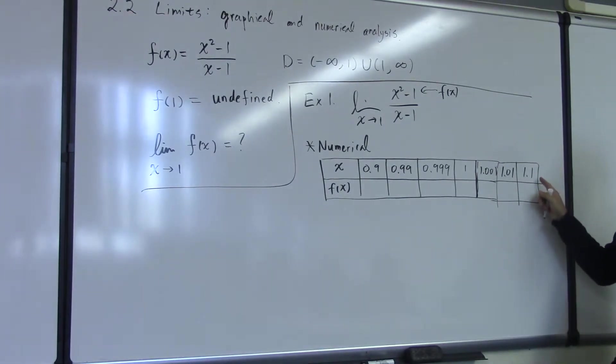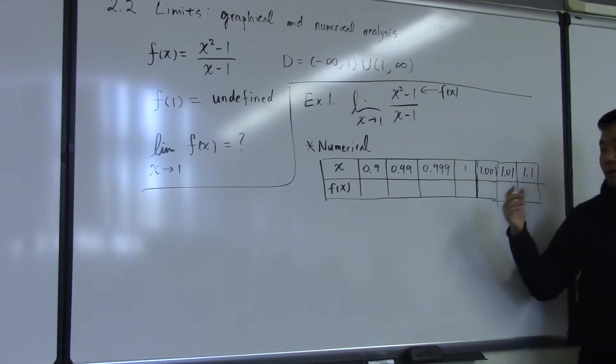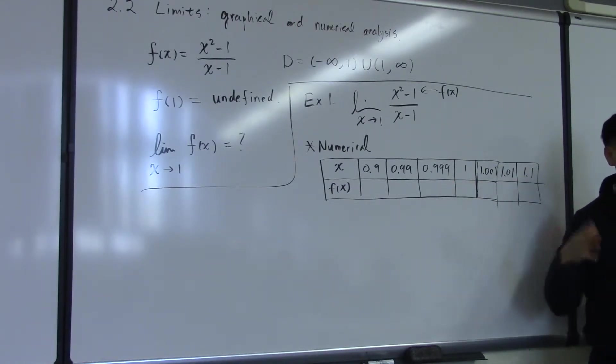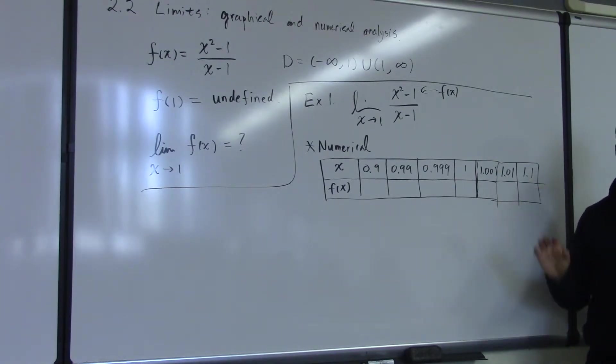And from this side, you have 1.1, 1.01, 1.001, and just think about these numbers getting closer and closer to 1. So if I had more room for more numbers, I would be plugging in 1.0001, and so on and so on.